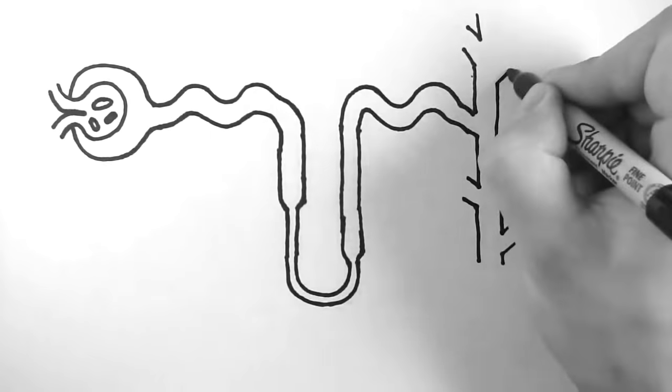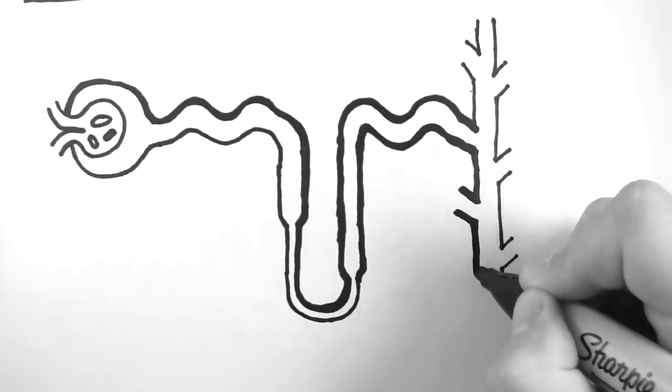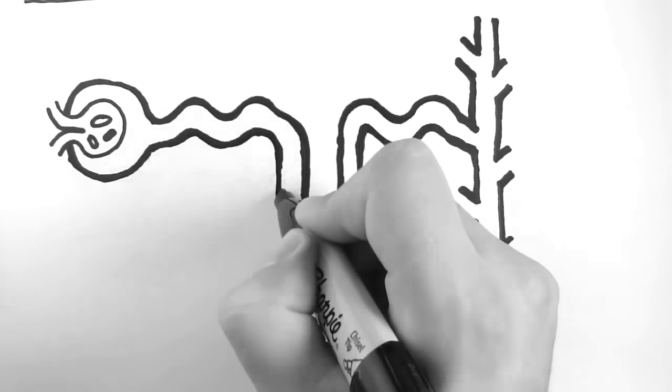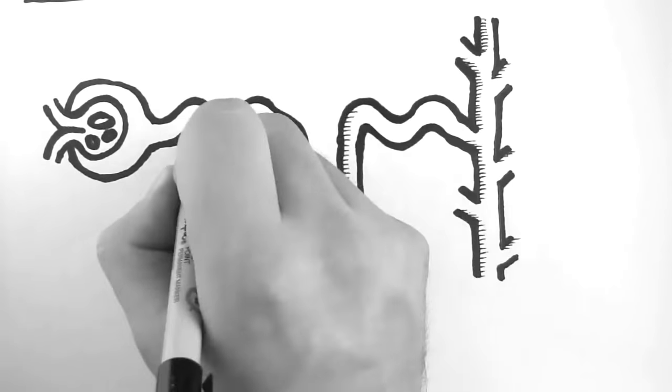So I'll begin by drawing a nephron, and this nephron is a little less than anatomically correct. But when we talk about the physiology of the nephron, it's easiest to draw it out like this.